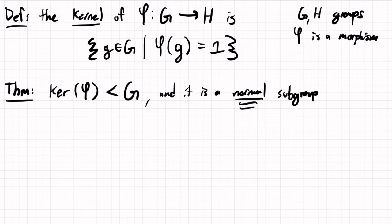The way that we will notate something being a normal subgroup is this triangle thing right here.